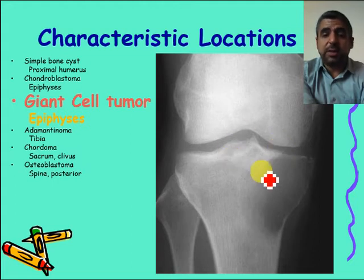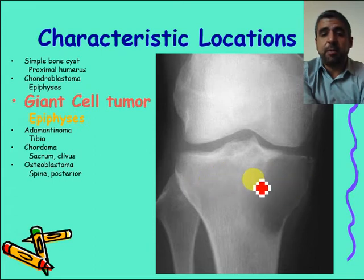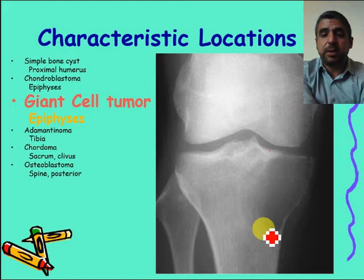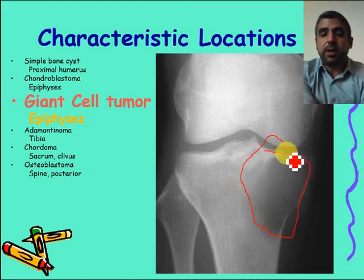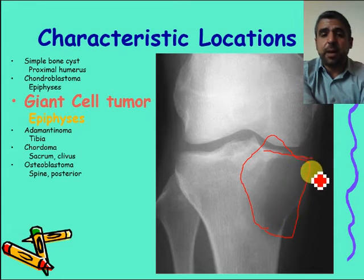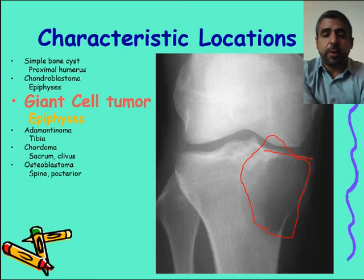Giant cell tumor is most commonly seen after closure of the growth plate — indicating an adult patient. It is a lytic lesion in contact with and abutting the articular surface of the joint, and it is slightly expansile, all indicating a giant cell tumor.